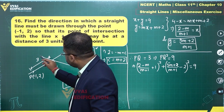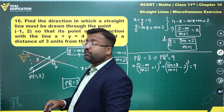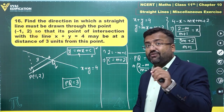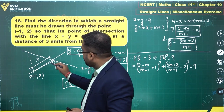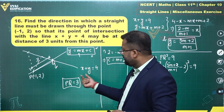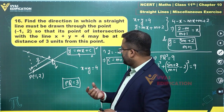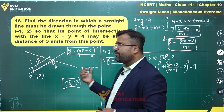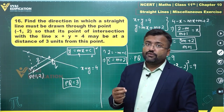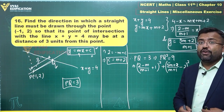One point Q can be at a distance of 3 units on one side, and another Q at 3 units on the other side — two valid configurations. We can also verify by checking the perpendicular distance from (-1, 2) to x + y = 4, which is |-1 + 2 - 4|/√2 = 3/√2, which is less than 3, confirming two intersection points exist.